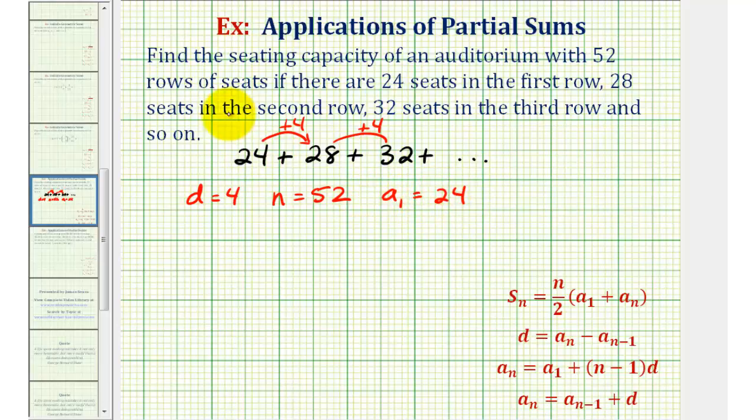And now to find the partial sum of this arithmetic series, we can use this formula here: Sₙ = (n/2)(a₁ + aₙ).